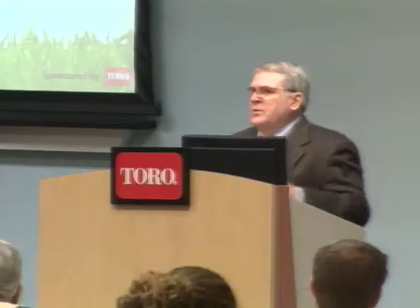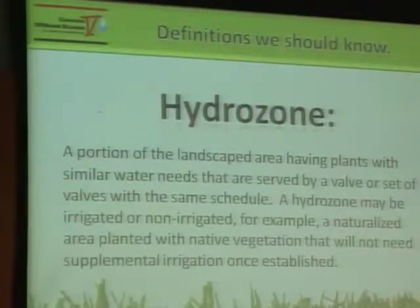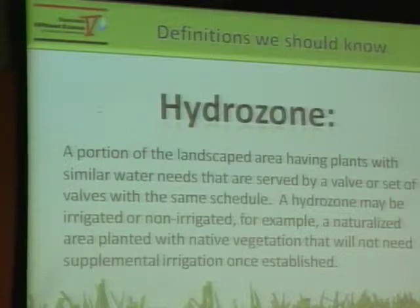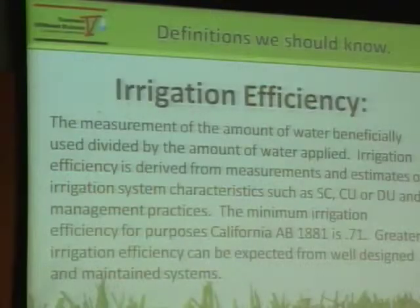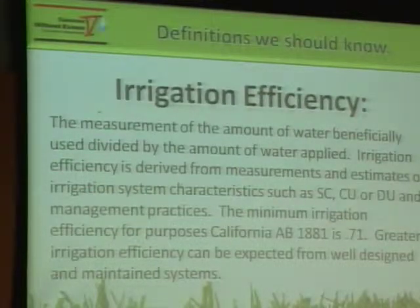Then we have hydrozones — these are when we plant like plants within a grouping. So turf grass would be a hydrozone, but not all turf grass is a hydrozone because if some of the turf grass is in shade, that's a different hydrozone than the turf grass in sun. So all of those things need to be considered in your irrigation system. Irrigation efficiency is when we measure the use of how the water is applied through an irrigation device such as a sprinkler.